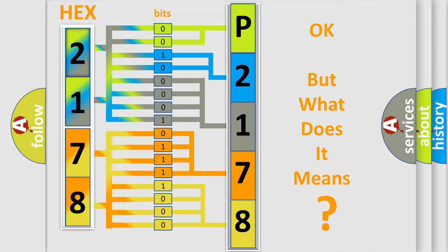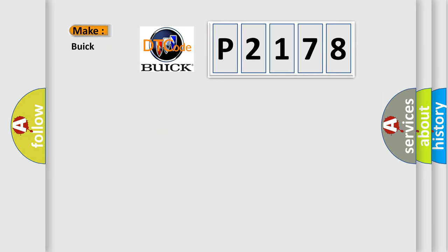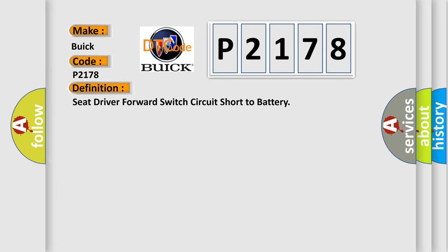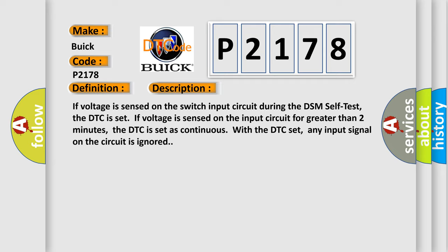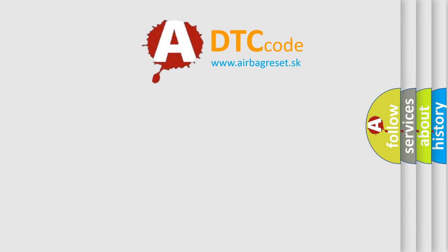We now know how the diagnostic tool translates received information into a more comprehensible format. The number itself does not make sense if we cannot assign information about what it actually expresses. So, what does the diagnostic trouble code P2178 interpret specifically for Buick car manufacturers? The basic definition is: Seat driver forward switch circuit short to battery. If voltage is sensed on the switch input circuit during the DSM self-test, the DTC is set. If voltage is sensed on the input circuit for greater than two minutes, the DTC is set as continuous. With the DTC set, any input signal on the circuit is ignored. The airbagreset website aims to provide information in 52 languages.